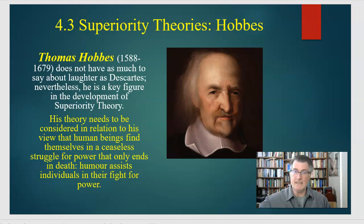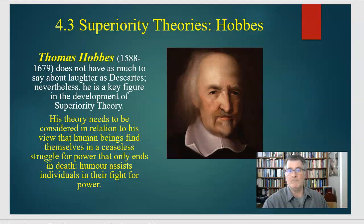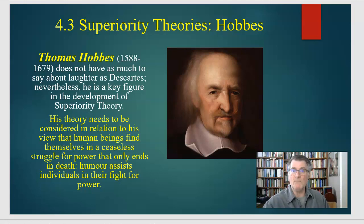The next person we're going to look at is Thomas Hobbes, living roughly at the same time as Descartes, born 1588, died 1679. Don't worry about the dates — what I'm pointing out is the particular historical era in which they're living. Hobbes, like Descartes, was also somewhat of a scientist and philosopher. He is clearer and closer to what we now call superiority theory and points out something very important that we can use as a kind of definition.